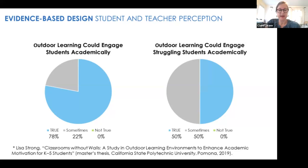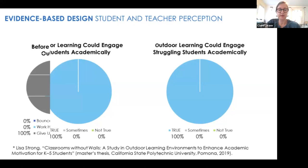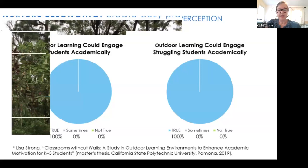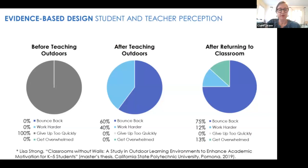In her 2019 Landscape Architecture Master's thesis, Lisa Strong asked 19 teachers to participate in an outdoor learning intervention — teaching a 30-minute session outdoors twice a week for 12 weeks. Before the study, 78% of teachers said outdoor learning could engage students academically, 22% said sometimes, and when asked about struggling students, only about half said outdoor learning could engage them. After the intervention, all of the teachers said it was true — including for struggling students. Strong also found that before the outdoor learning intervention, 100% of teachers thought struggling students gave up too quickly when faced with setbacks. After teaching outdoors, 60% thought struggling students bounced back and 40% answered that students worked harder. This striking shift in perspective lasted even after the intervention ended.